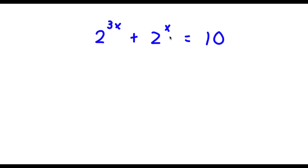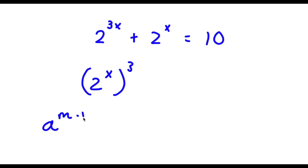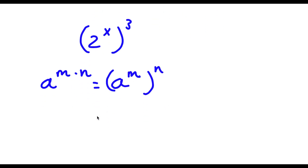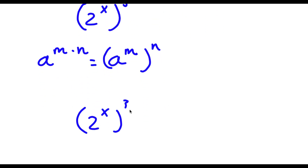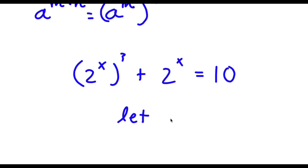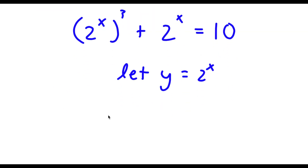So I have 2 to the power of 3x plus 2 to the power of x is equal to 10. The first thing I'm going to do is rewrite 2 to the power of 3x as 2 to the power of x, to the power of 3. I can do this because a to the power of m times n is the same thing as a to the power of m to the power of n. So now I have 2 to the power of x, to the power of 3, plus 2 to the power of x equals 10. I'm going to let y equal 2 to the power of x, so now I have y to the power of 3 plus y equals 10.